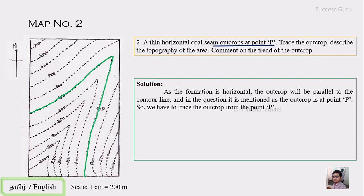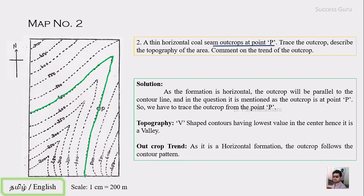The first two maps are relatively straightforward. The topography follows the same pattern — V-shaped contours with the lowest value at the center. A horizontal formation is always parallel to the contours. If you follow this map correctly, you can see the elevation levels clearly. Thank you, and I will meet you in the next class.